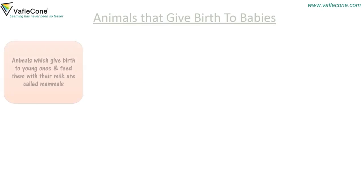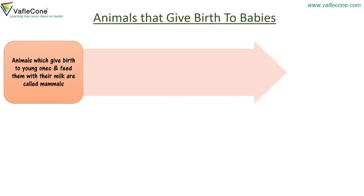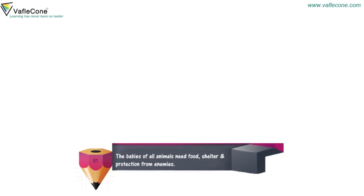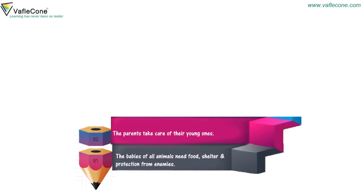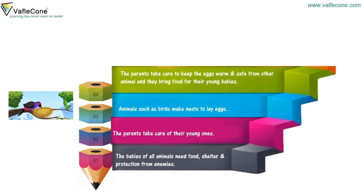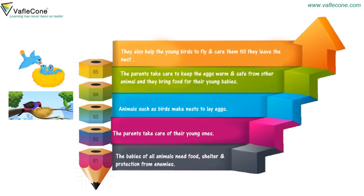Animals that give birth to babies: animals which give birth to young ones and feed them with their milk are called mammals — for example, cow, goat, dog, cat, horse. The babies of all animals need food, shelter and protection from enemies. The parents take care of their young ones. Birds make nests to lay eggs, keep the eggs warm and safe from other animals, and bring food for their young babies. They also help the young birds to fly and care for them till they leave the nest.